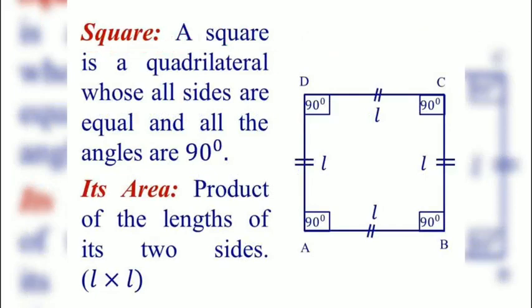The square: a square is a quadrilateral whose all sides are equal and all the angles are 90 degrees. Its area is the product of the length of its two sides.